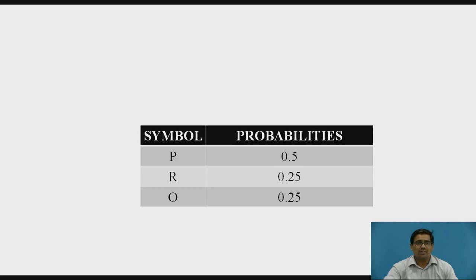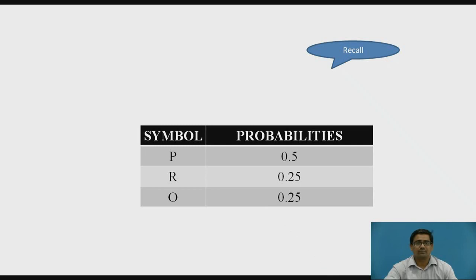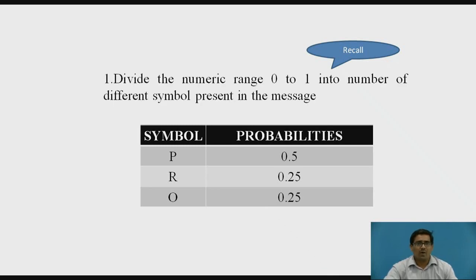From that previous example, I made one table with the symbol and their respective probabilities. For P, the probability is 0.5. For R, we calculate 0.25. Now everyone, pause the video and recall what is the first step of arithmetic coding. The first step is: divide the numeric range 0 to 1 into the number of different symbols present in the message.